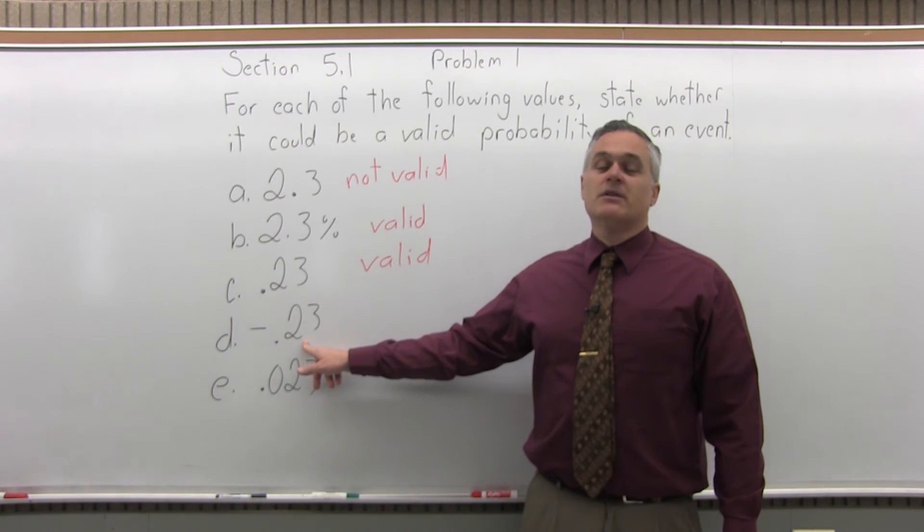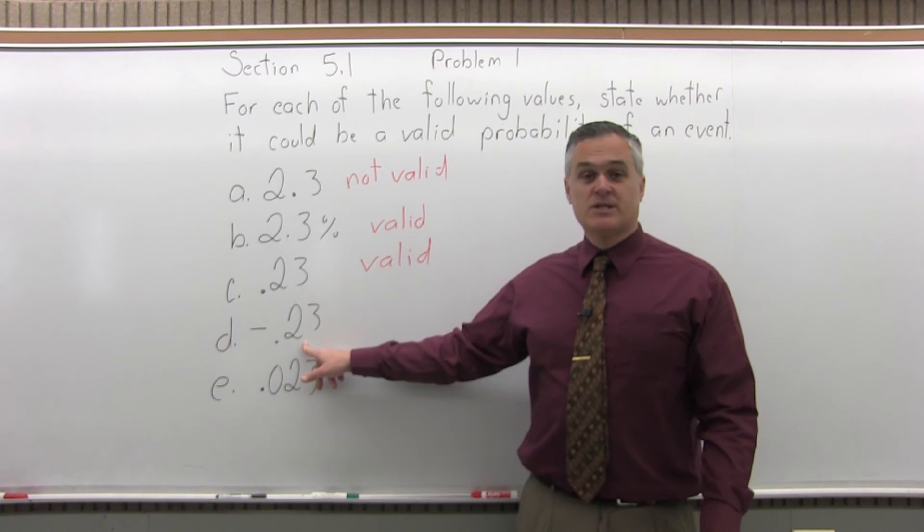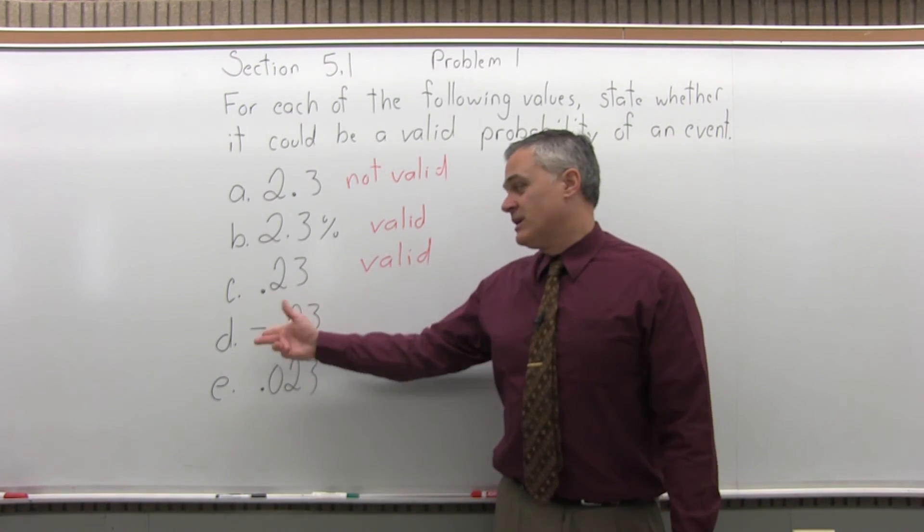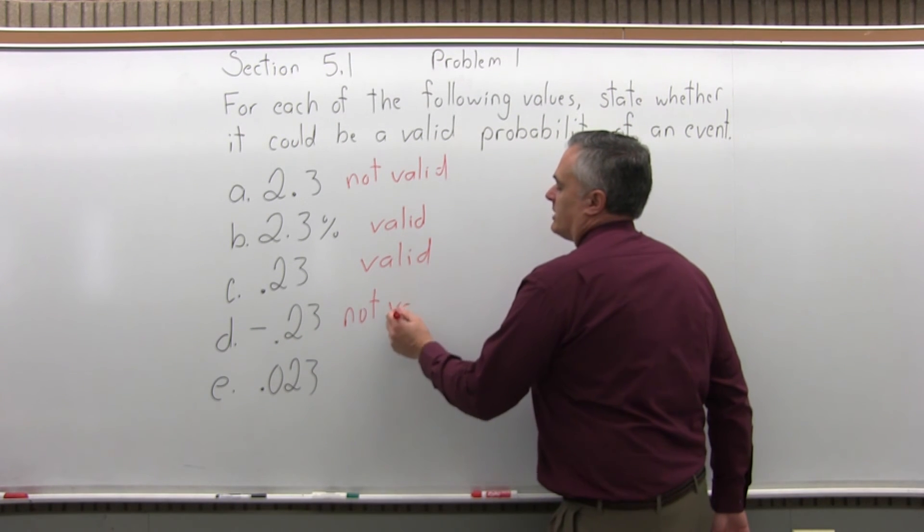Negative .23, that's not a valid probability. Probability can never be negative. Again, the smallest it can be is 0, and a negative value is even smaller than 0, so any negative value would not be a valid probability.